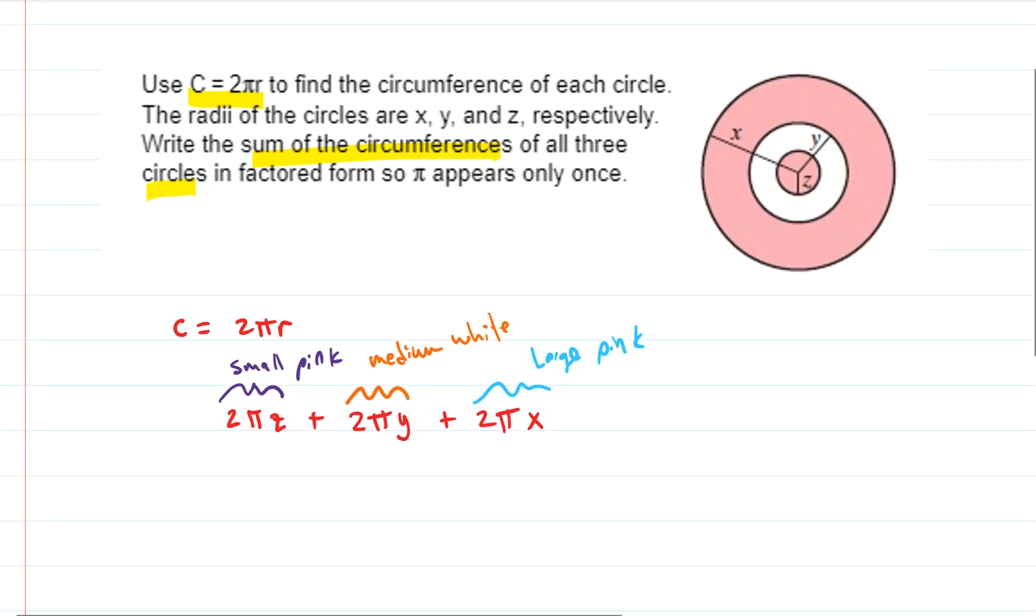So this is the sum right here—this is the sum of all three of their circumferences. But they ask us to do something more than just write their sum. They say write it in factored form so π only appears once.